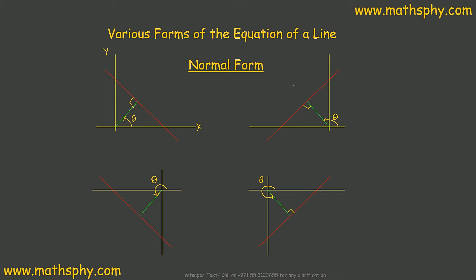Now, the concept here or the equation here for the normal form of a line will remain the same in any of these four conditions. Line falls into first quadrant, second quadrant, third, or fourth. In any of these cases, the equation of the line will remain the same. Now, let's try to study what would be the equation of the line in case of normal form.